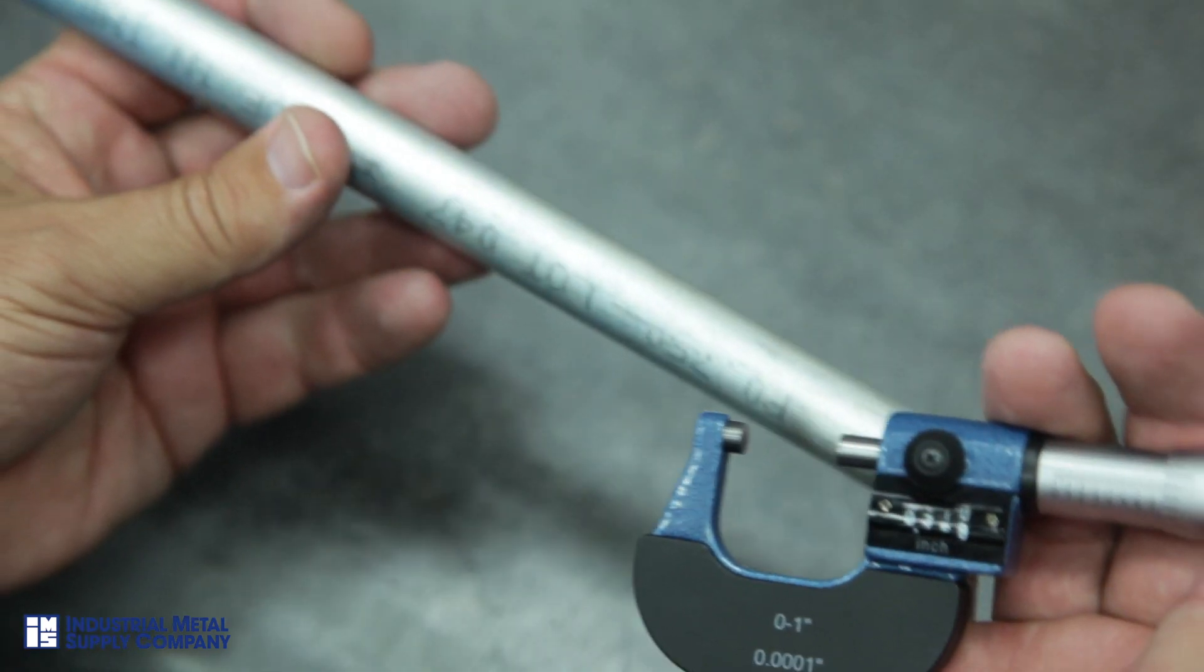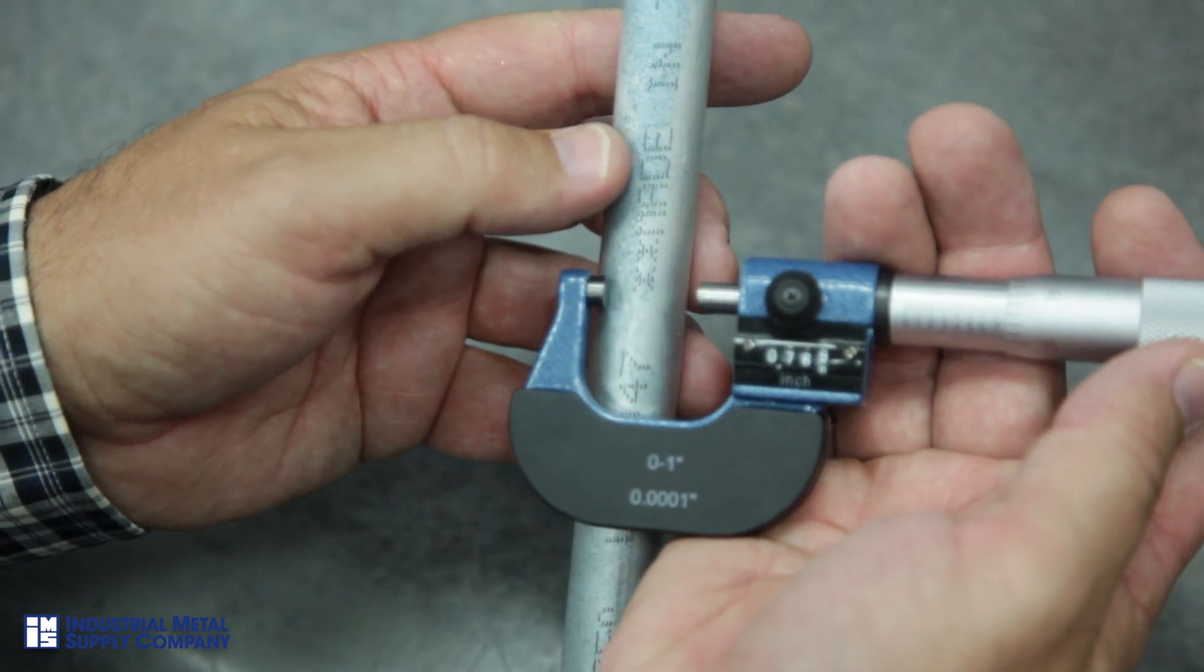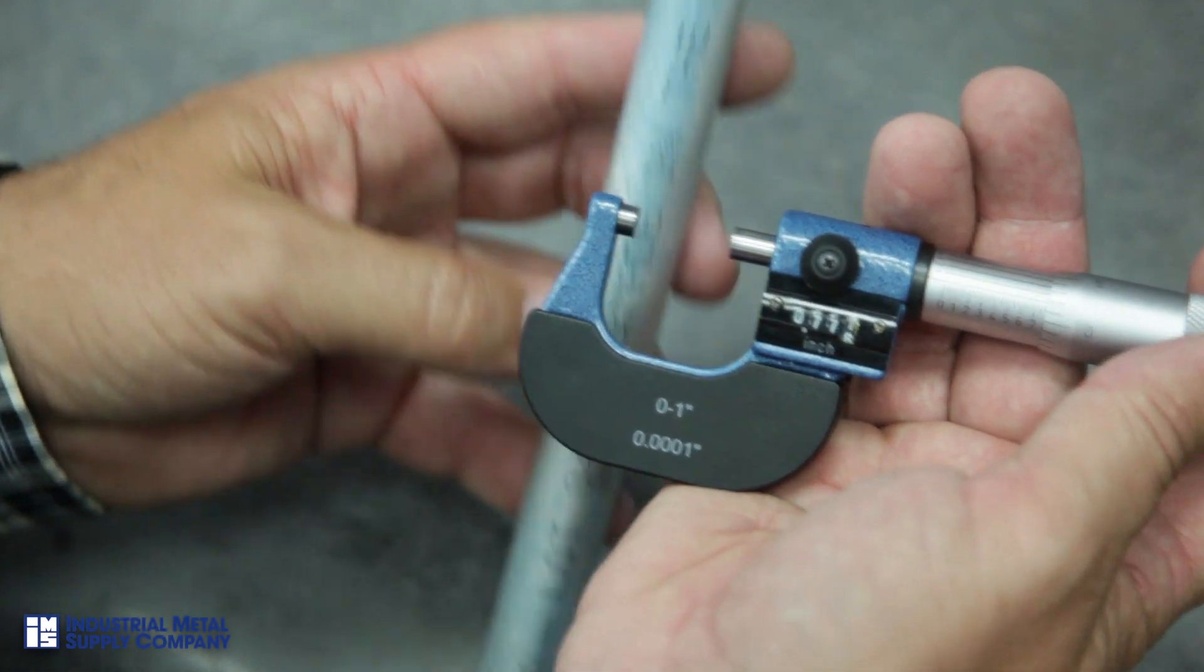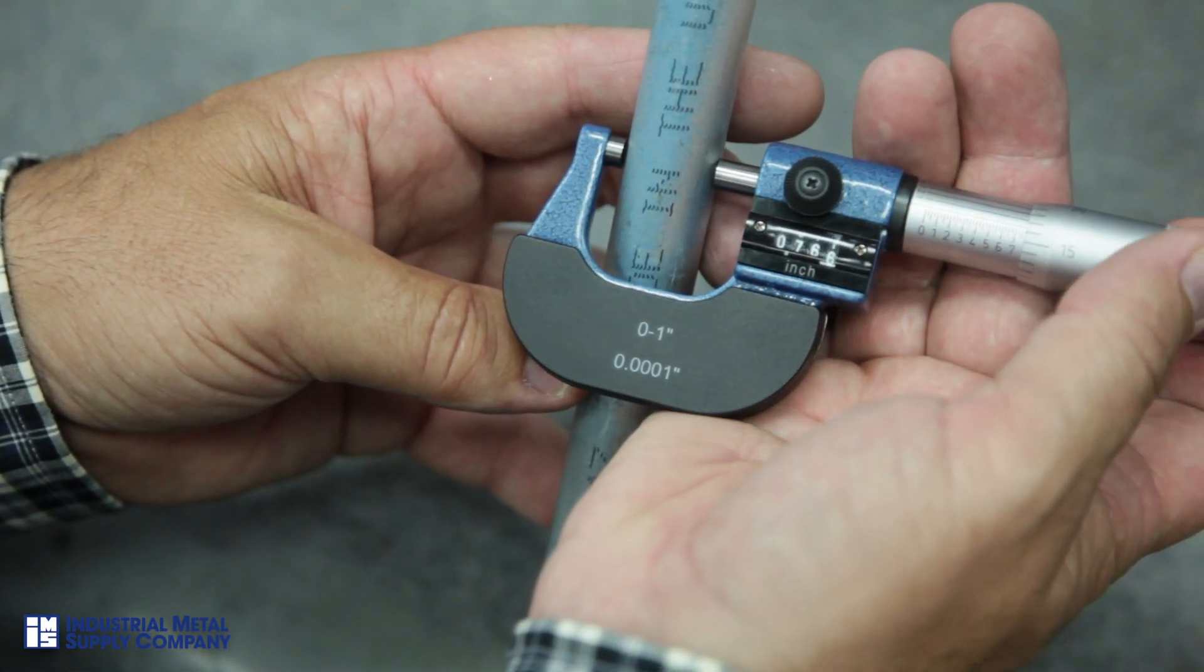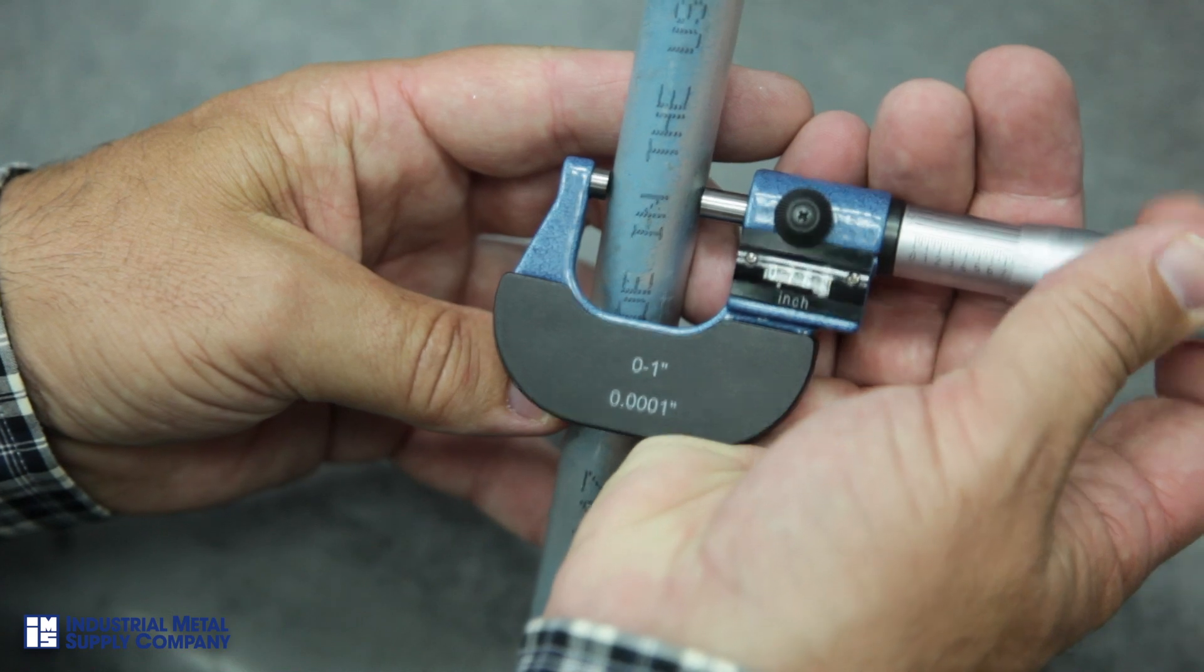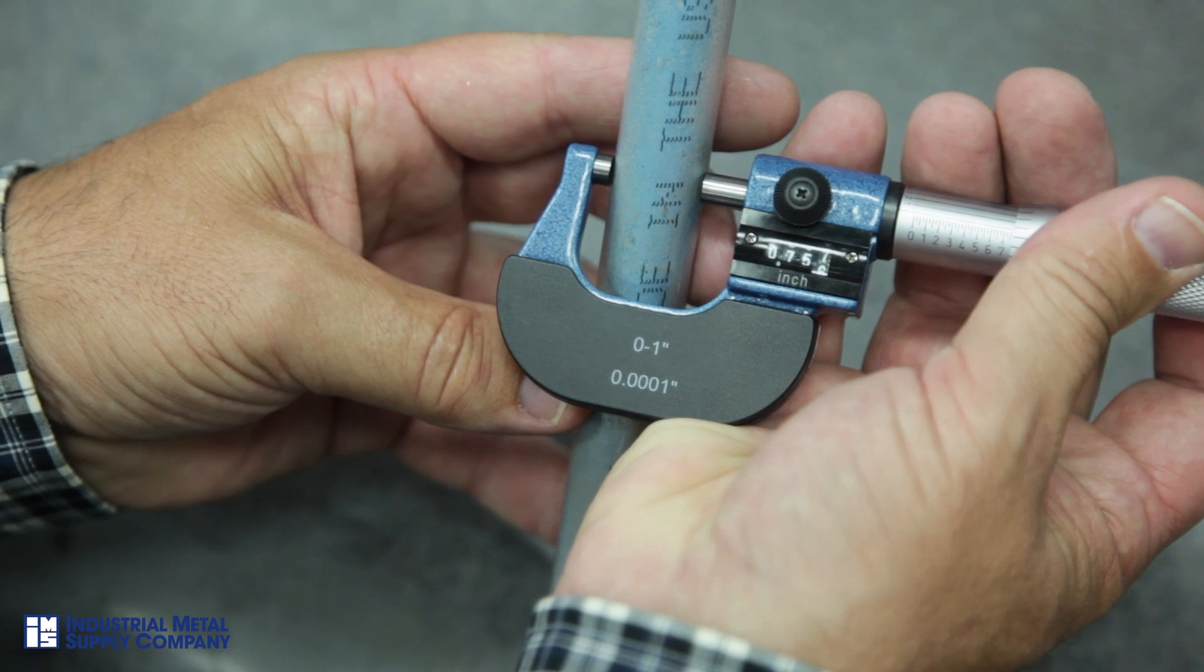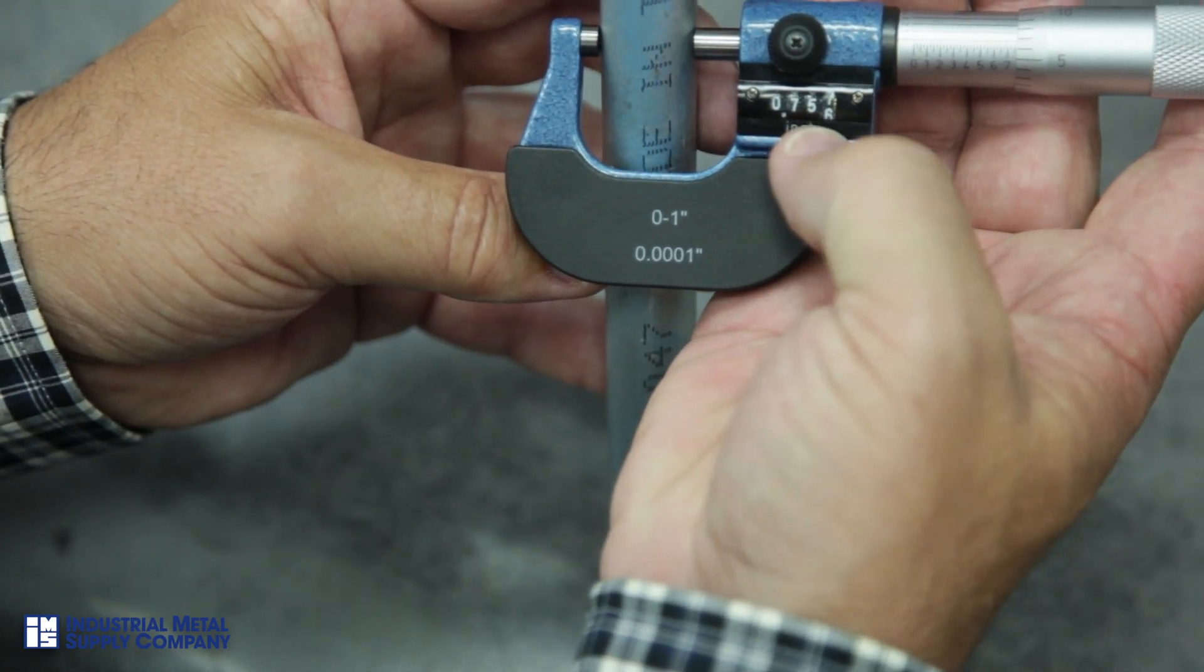Now we're going to measure this three-quarter inch rod with a digital zero to one micrometer. By opening the micrometer to greater than 750 thousandths, placing the anvils on both sides of the diameter, tightening the spindle, not too tight, and recording the 756, 757 thousandths.